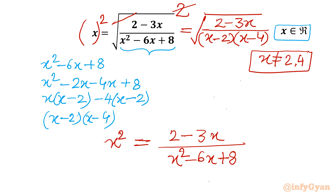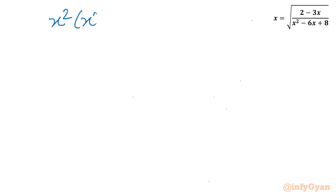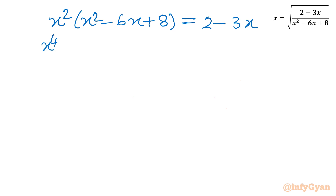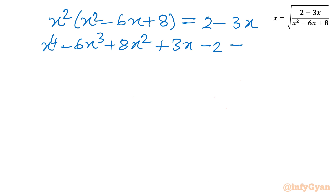Now I will cross multiply to get x squared times (x squared minus 6x plus 8) equals 2 minus 3x. Expanding and rearranging, we obtain x to the power 4 minus 6x cubed plus 8x squared plus 3x minus 2 equals 0.